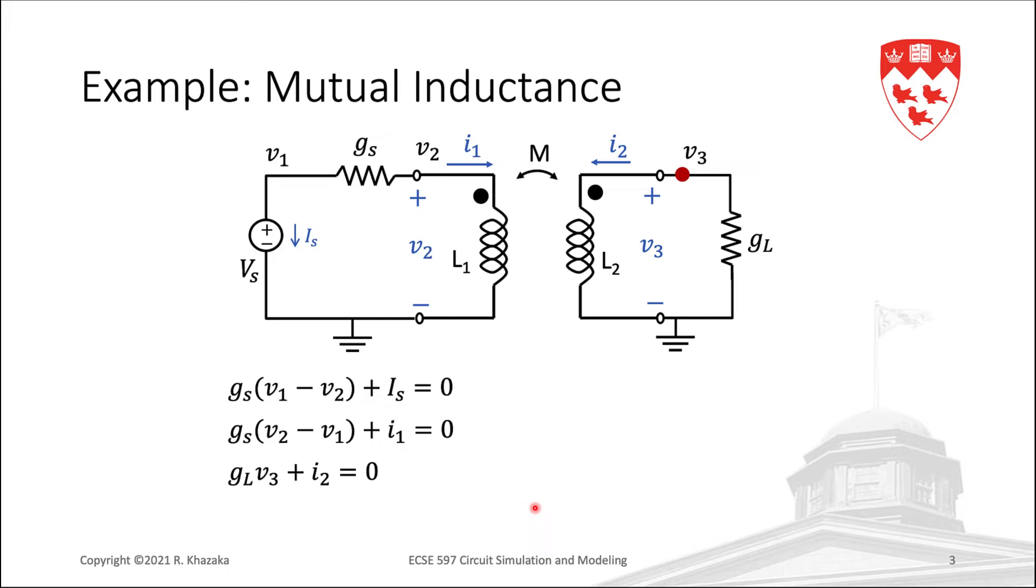The first is the voltage source model, V1 equals Vs. We saw this when we developed the stamp for voltage sources.